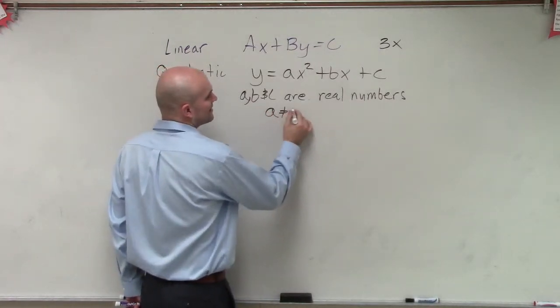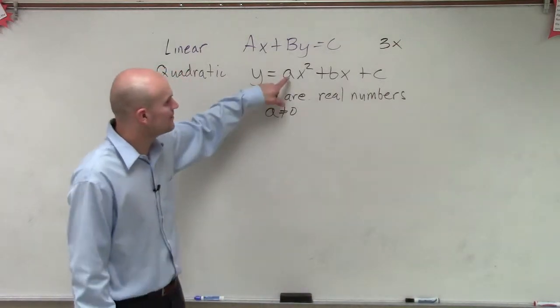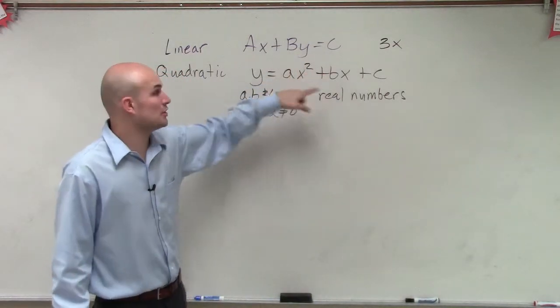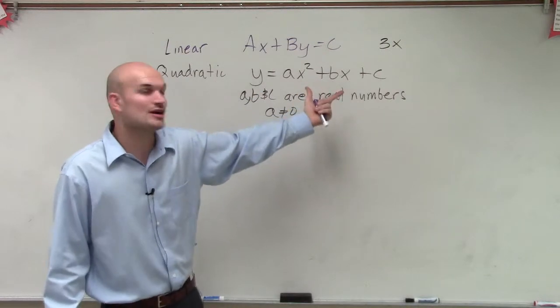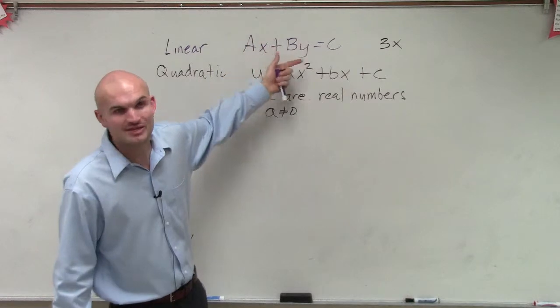And the reason why a cannot equal 0 - well, if a equals 0, then 0 times x squared would just be 0, therefore meaning we wouldn't have a squared term. Well, if we didn't have a squared term, we're just left again with another linear equation.